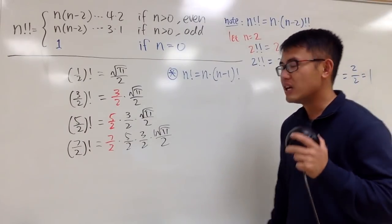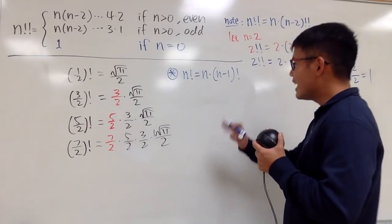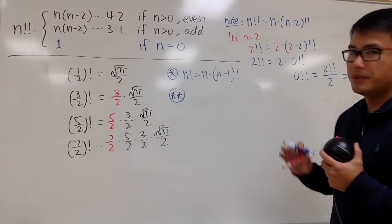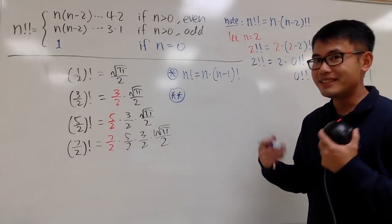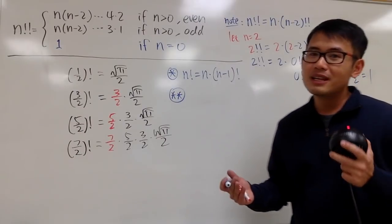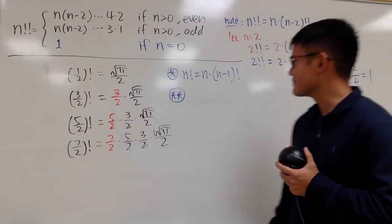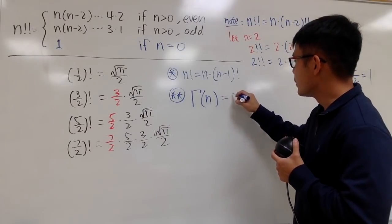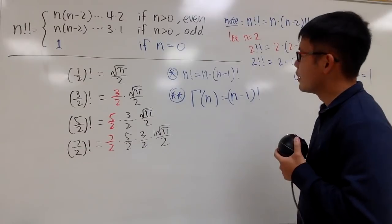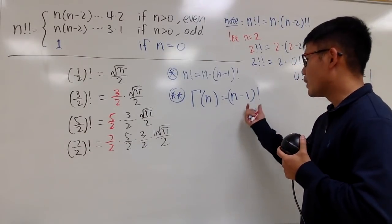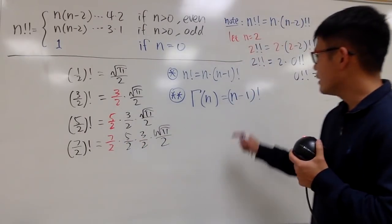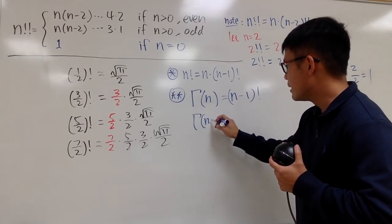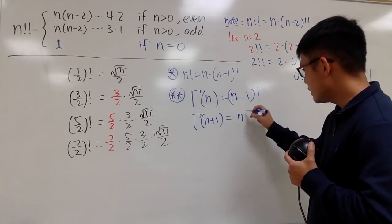Now let's make a connection with the gamma function. I'm going to bring up more properties — I have done all these in the past, so if you guys want to check that out, be sure to watch my videos. Here is the traditional presentation for gamma: Γ(n) is equal to n minus 1 factorial. But I want to look at this in a different way. So let me plug in n plus 1 into n on both sides. In other words, we know that gamma of n plus 1 is actually equal to n factorial. That's very nice.